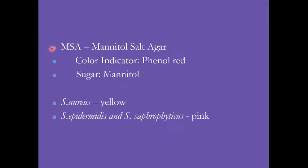The inhibiting substance in Mannitol Salt Agar is 7.5% NaCl. Not many organisms can ferment mannitol in the presence of 7.5% NaCl, making it very selective for Staph aureus. In MDRO screening, swabs from axilla, nose, groin, and fingernails are plated on MSA. If yellow colonies are isolated, the sample is tested for MRSA to prevent healthcare transmission.